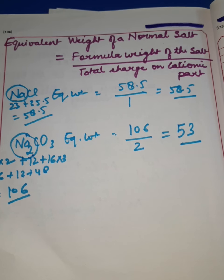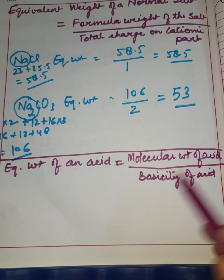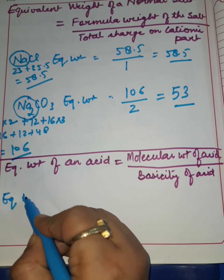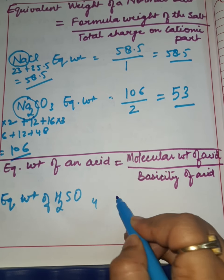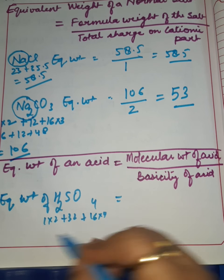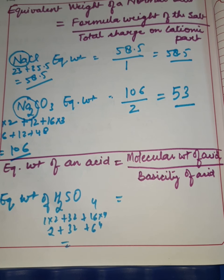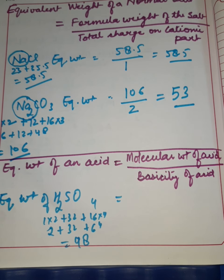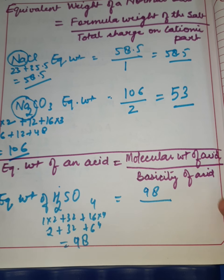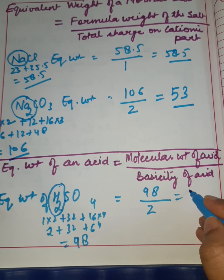Next is equivalent weight of an acid. Equivalent weight of an acid equals molecular weight of the acid divided by its basicity. For example, for H₂SO₄: molecular mass is 1×2 plus 32 plus 16×4, which gives 2 plus 32 plus 64, equaling 98. Basicity is the number of replaceable hydrogen atoms, which is 2 for H₂SO₄. So equivalent weight is 98 divided by 2, which equals 49.